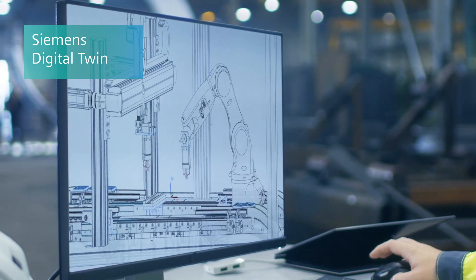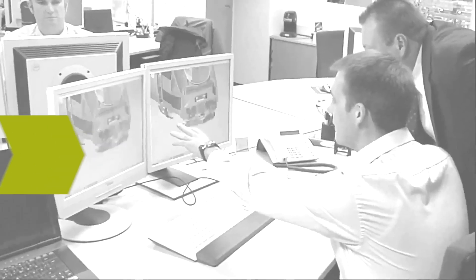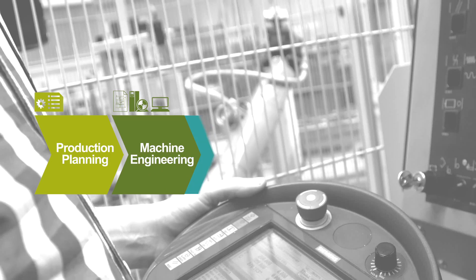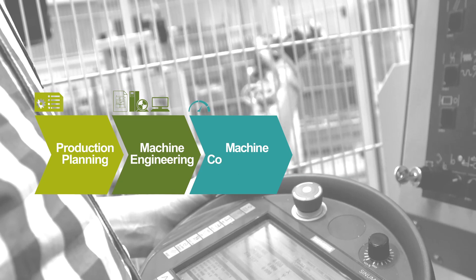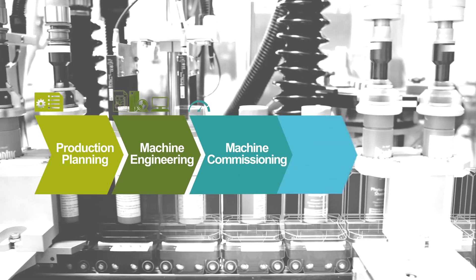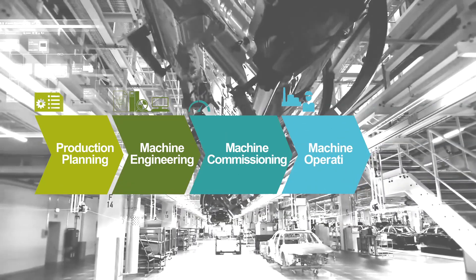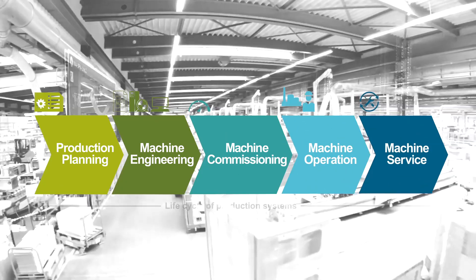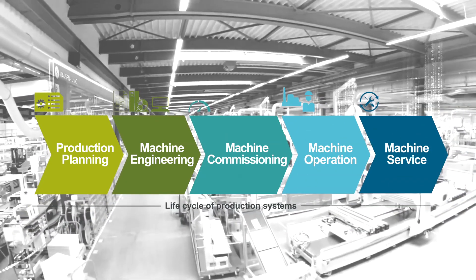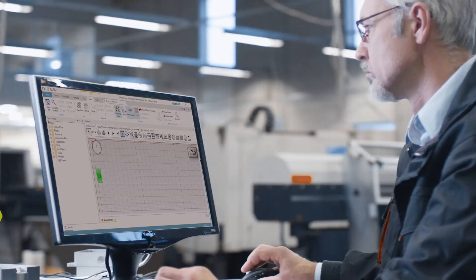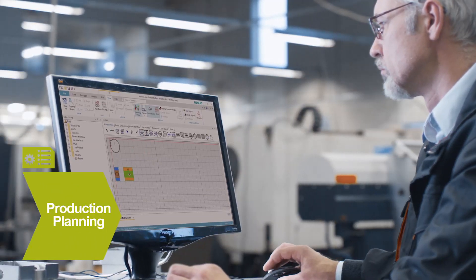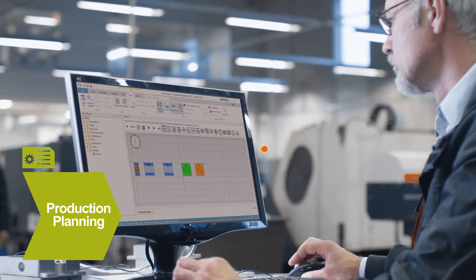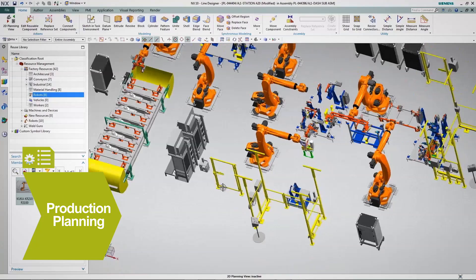of a machine that can be used through the entire machine builder's business process — not to mention help your customer operate and maintain the machine to maximize uptime and increase efficiency. It starts with production planning with Siemens Plant Simulation software.